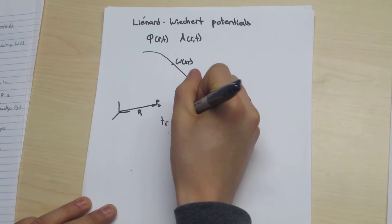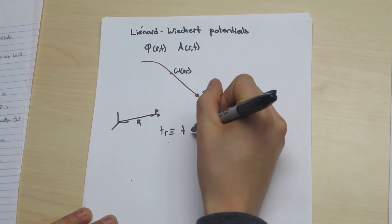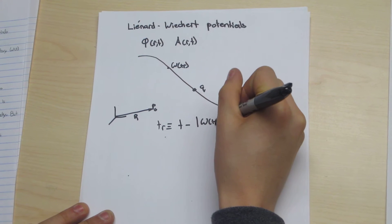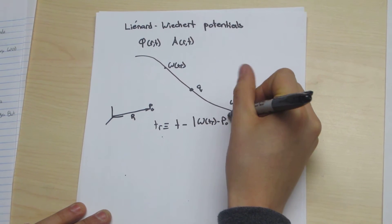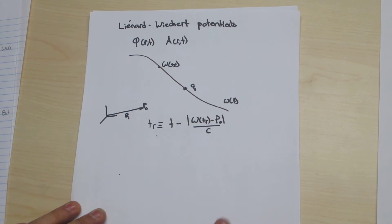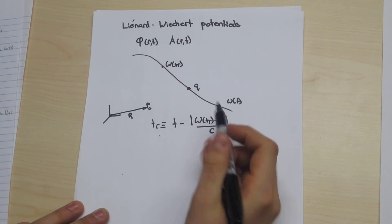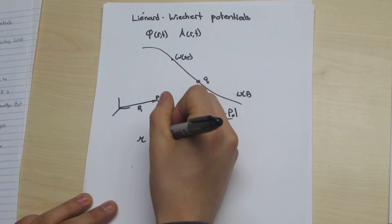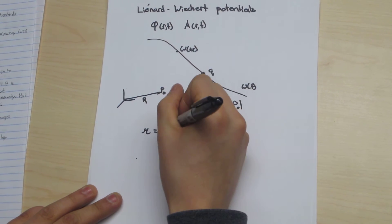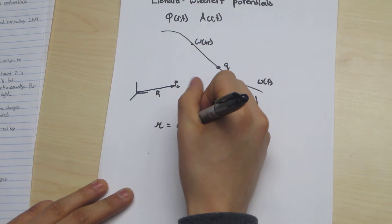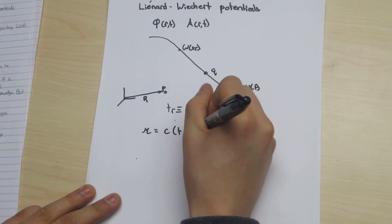Is defined by t-r equals t minus the magnitude of omega t-r minus p-naught over c, where this expression is defined as r, and is equal to the distance the information travels between times t and t-r.